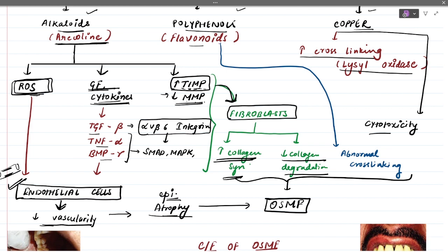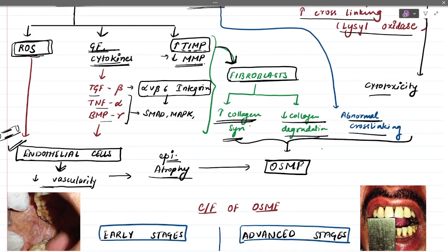All these growth factors, cytokines, and increased TIMPs lead to increased fibroblast activity and decreased collagen degradation. Flavonoids cause abnormal cross-linking — like copper, they increase cross-linking between tropocollagens, also leading to decreased collagen degradation. All of these processes increase fibrosis and ultimately lead to OSMF over the course of years.